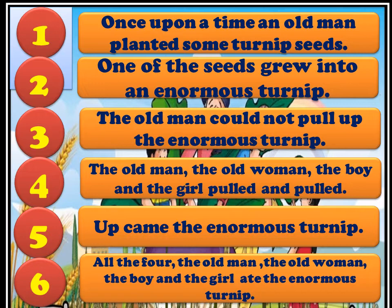So here, after arrangement of the sequence, we get the story. One: once upon a time, an old man planted some turnip seeds. Second: one of the seeds grew into an enormous turnip. Third: the old man could not pull up the enormous turnip. Fourth: the old man, the old woman, the boy, and the girl pulled and pulled. Fifth: up came the enormous turnip. And the sixth one: all four — the old man, the old woman, the boy, and the girl — at the enormous turnip.